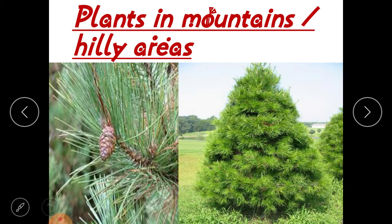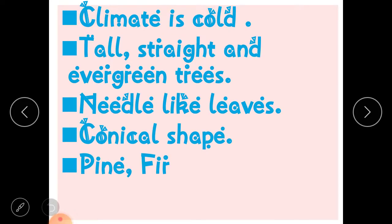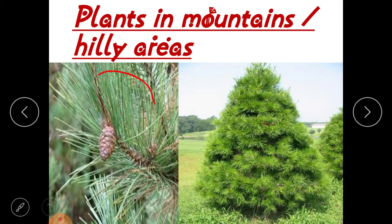The next category is plants in mountains or hilly areas. It is generally cold in hilly areas — the temperature is very cold. The trees which grow in mountain areas are tall and straight, and they are evergreen trees because they do not shed their leaves in winters; they are green in all months of the year. They also have needle-like leaves.